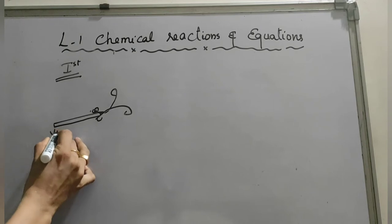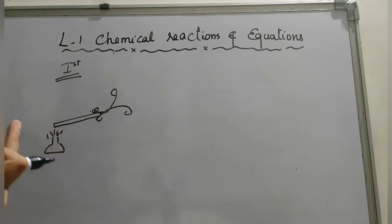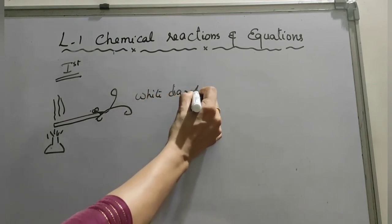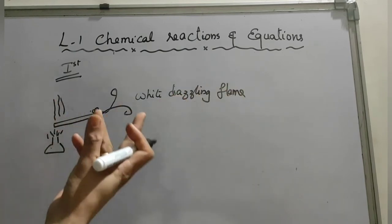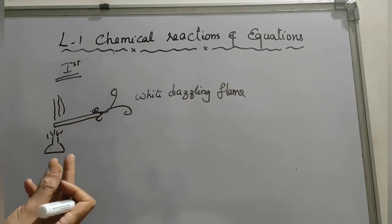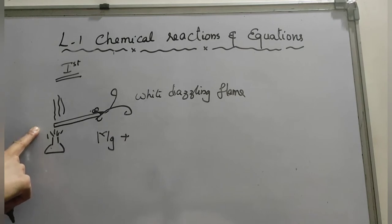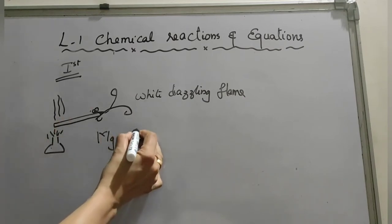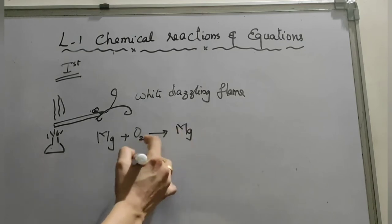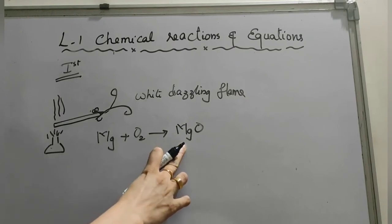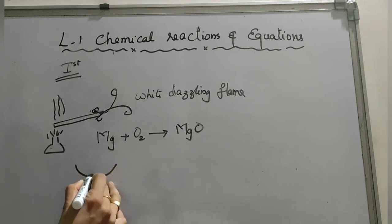When you burn the magnesium ribbon, you observe a white dazzling flame. Afterwards it is converted into ash. Magnesium reacts with oxygen — burning means reacting with oxygen — to form magnesium oxide: Mg + O₂ → MgO. This magnesium oxide is a white ash. Collect that ash in a watch glass.